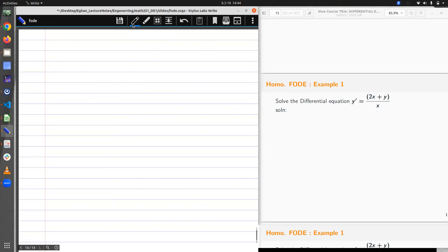Example one. It says solve the differential equation y prime equal to 2x plus y all over x. You would agree with me that this is a first order differential equation. And if you want to write in differential form, this is the same as dy/dx is equal to 2x plus y all over x. If I do a cross multiplication, I have x dy is equal to 2x plus y dx. This is the differential form.